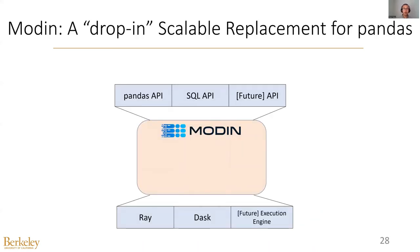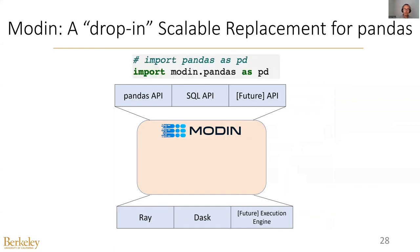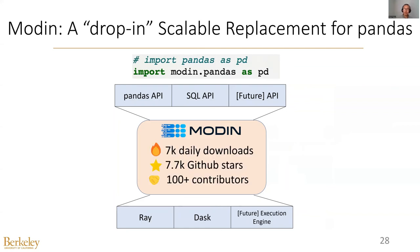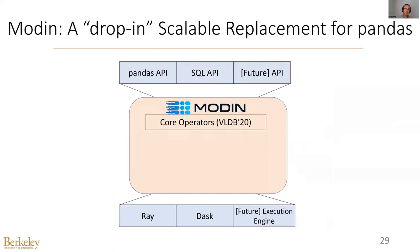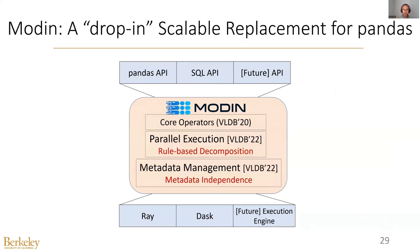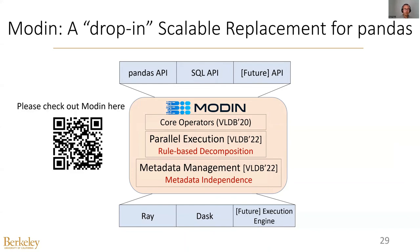Therefore, we have a separate project called Modin for directly scaling Pandas execution. Its idea is to run Pandas APIs directly on distributed execution frameworks such as Ray or Dask. To use Modin, you only need to change one line of your code. It has daily downloads of more than 7,000 and over 7,000 GitHub stars. The core idea of Modin is to map the more than 600 Pandas functions into 15 core operators and run them in parallel using techniques such as rule-based compilation and metadata independence.